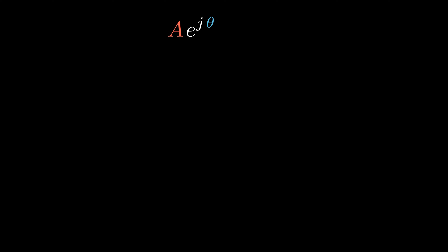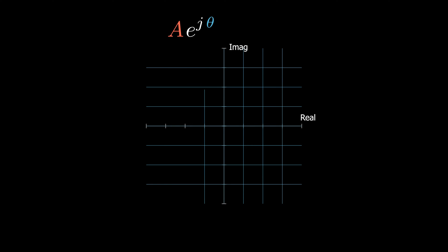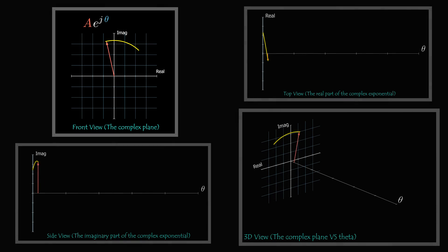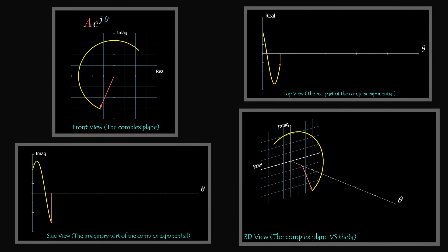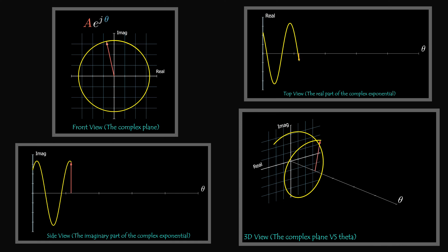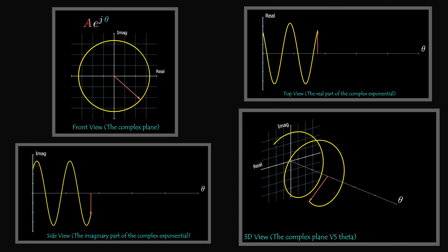e to the j theta is a complex number in polar form, represented in a complex plane as a vector with magnitude a and phase theta. Theta represents the angle of the vector from the positive x axis. If theta is variable — for instance, if theta is a function of time — then as time goes on, theta increases and the vector rotates in a complex plane.